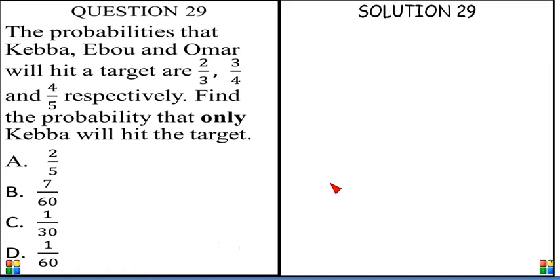Question 29. The probabilities that Keba, Ebo, and Homer will eat a target are 2 over 3, 3 over 4, and 4 over 5, respectively. Find the probability that only Keba will eat the target.